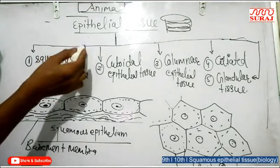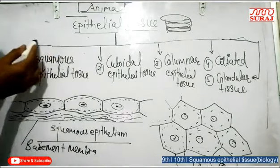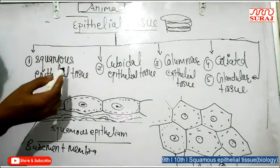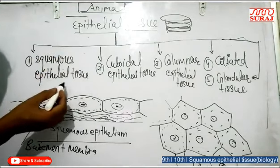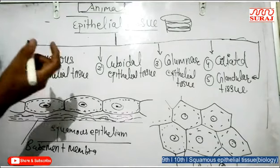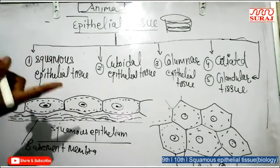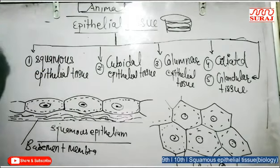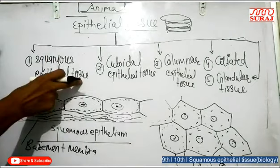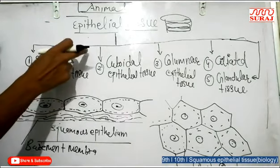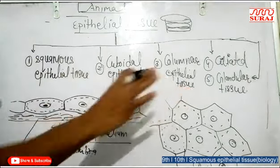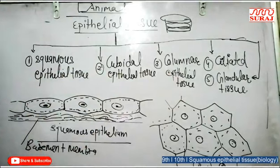Epithelial tissue also acts as goblet cells or glands to secrete hormones or enzymes in the body. On the basis of cell layers, epithelial tissue is mainly of two types: simple and compound. On the basis of shape, there are mainly four or five types.